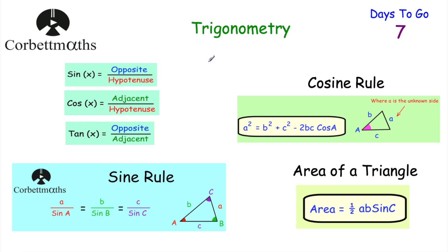Today we're looking at a mixture of trigonometry questions. We've looked at basic trigonometry — SOH-CAH-TOA — and the sine rule: a over sine A equals b over sine B equals c over sine C, or flipped to sine A over little a equals sine B over little b equals sine C over little c when finding an angle. We've looked at the cosine rule: a squared equals b squared plus c squared minus 2bc cos A to find the length of a side. We've also looked at the area of a triangle: half ab sine C. For right-angle triangles where you know two sides and want an angle, or know a side and an angle, use basic trigonometry.